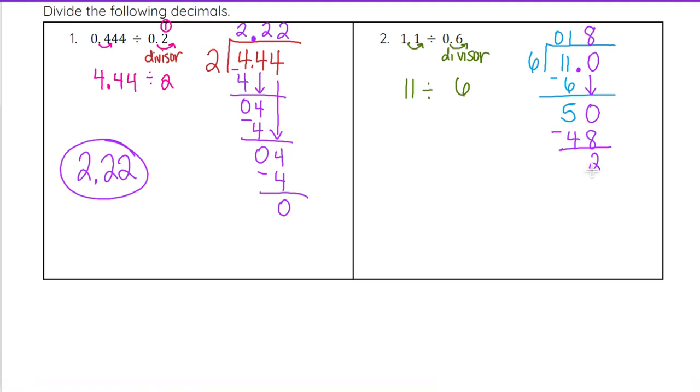Notice 6 does not go into 2, so we need to put another 0 there and bring that 0 down. So now we are looking at 20. Now 6 does go into 20. 6 goes into 20 3 times. 3 times 6 is 18. We subtract 20 minus 18 gives us 2.